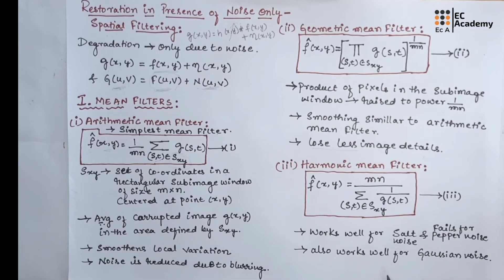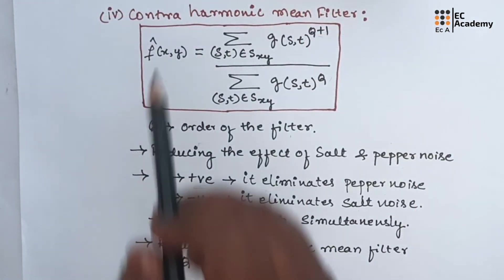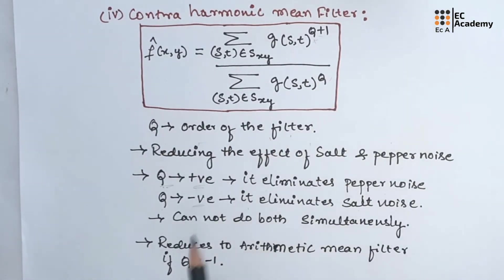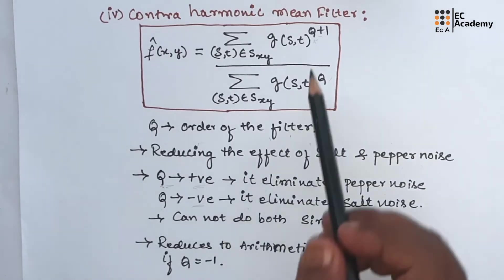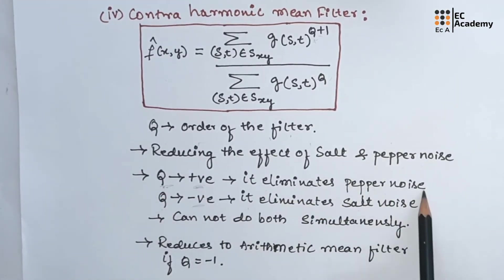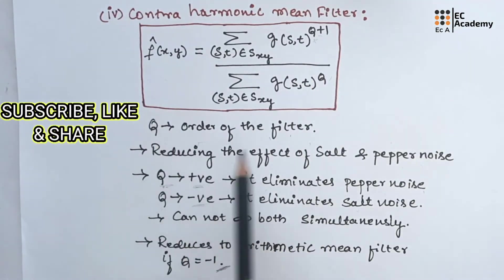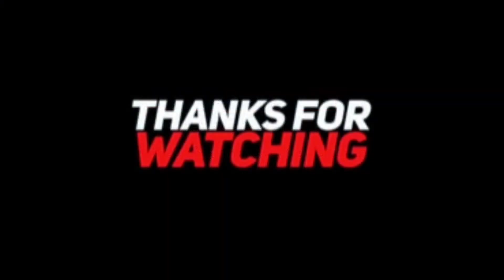The fourth type of filter is contra harmonic mean filter. This is the representation of contra harmonic mean filter. Here, Q represents the order of the filter. This filter is well suited for reducing the effect of salt and pepper noise. In this above formula, if Q is positive, it eliminates pepper noise and if Q value is negative, it eliminates the salt noise. So, it cannot reduce both the noise simultaneously. It cannot reduce salt and pepper noise at a time. Either it can eliminate pepper noise or it can eliminate salt noise. Contra harmonic mean filter will reduce to arithmetic mean filter if we take Q value as minus 1. If you make Q value as minus 1, this contra harmonic mean filter will act as arithmetic mean filter.